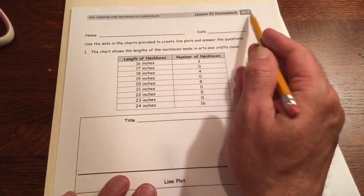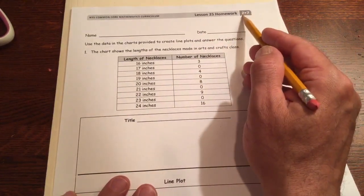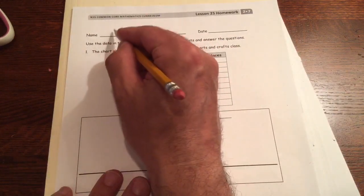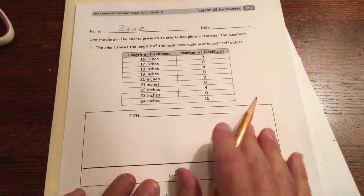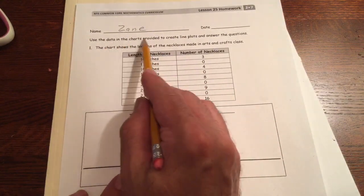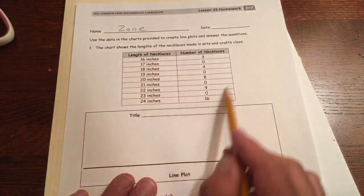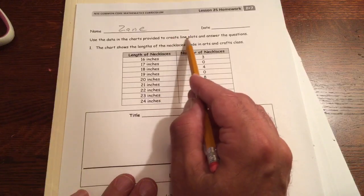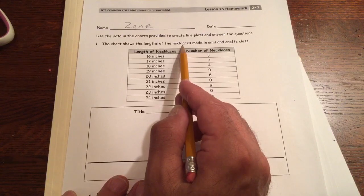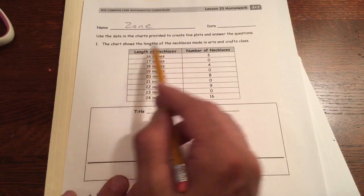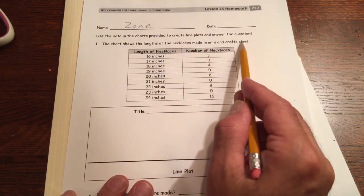This is lesson 25 homework, module 7, grade 2. Write your name and we're going to use the data in the charts provided, there's a chart right here, to create line plots and answer the questions. The chart shows the lengths of the necklaces made in arts and crafts class.